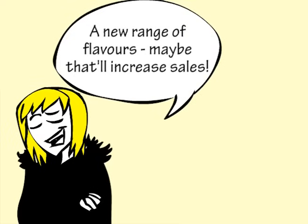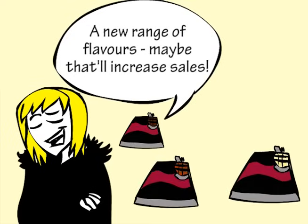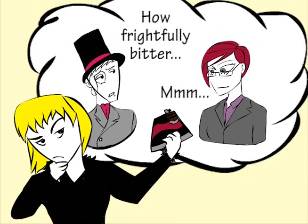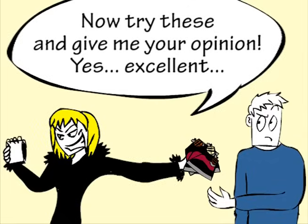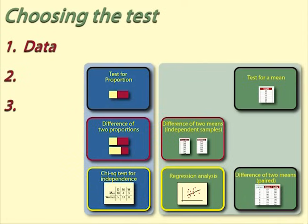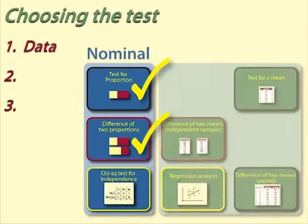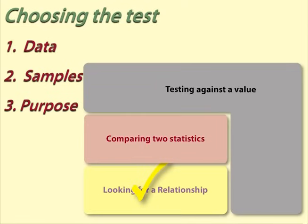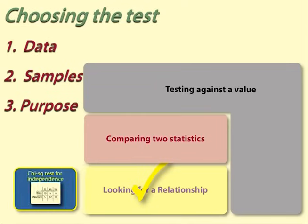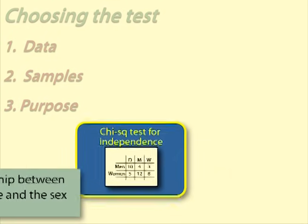Example 7: Men and women and chocolate preference. Helen is thinking of selling dark chocolate, milk chocolate, and white chocolate choconutties. She thinks men and women might have different preferences with regard to type. She collects data from 50 customers, noting if they are men or women and asking which variety they prefer. Data: Helen records the type of chocolate and sex of person — both nominal variables. Samples: one sample of 50 customers with two variables. Purpose: looking at the relationship between the two variables. Thus, the test is chi-squared test for independence.